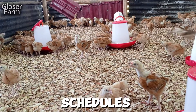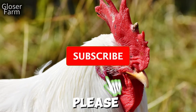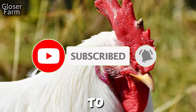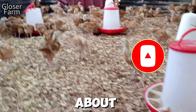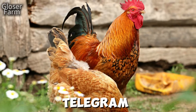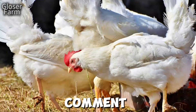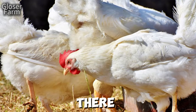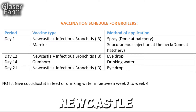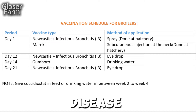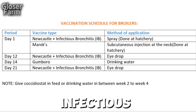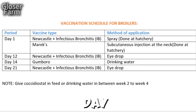As for the vaccination schedule for broiler chickens: broilers are vaccinated against Newcastle, infectious bronchitis, and Marek's disease on the first day of their lives at the hatchery. When they are 12 days old, administer Newcastle and infectious bronchitis. On the 14th day, give Gumboro vaccine, and on the 21st day, vaccinate them against Newcastle and infectious bronchitis.